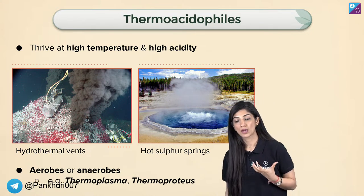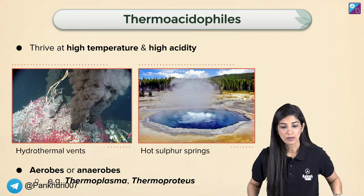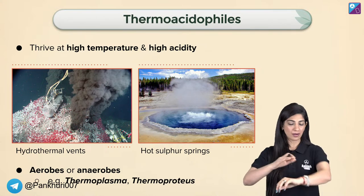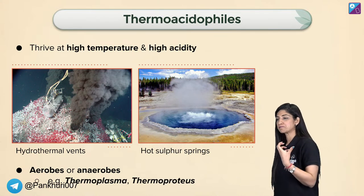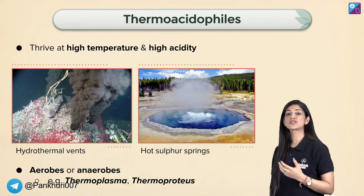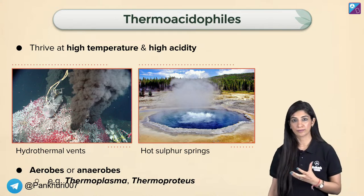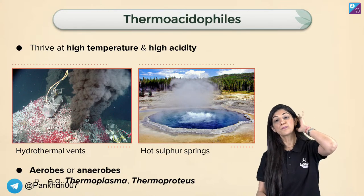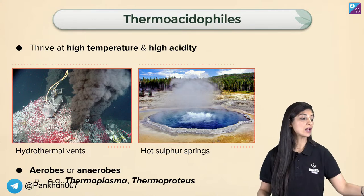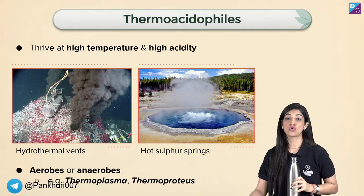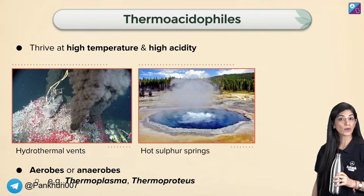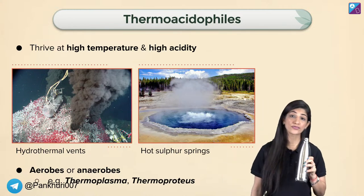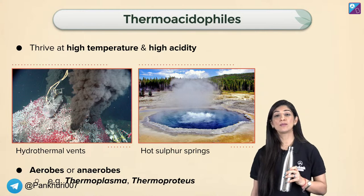Some people believe hot water springs can cure diseases and rub the water on their bodies. In many places around the world there are hot water springs where temperature can go up to 100 degrees — boiling water — and sometimes the pH is also very low. These are sulfur springs where sulfuric acid is present, making the pH as low as 2 or 3. Bacteria living in such hot, acidic water springs are called thermoacidophiles.